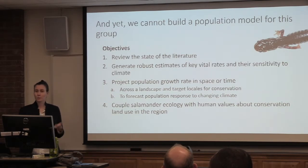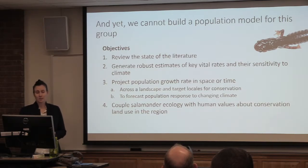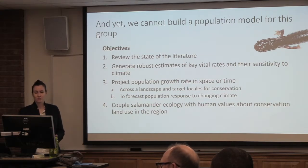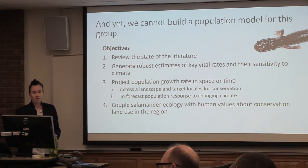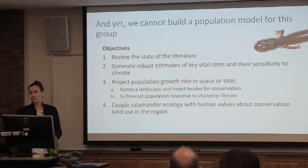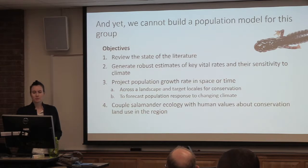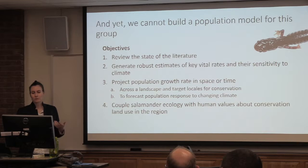And yet despite their importance and how well studied they are, we can't build a population model for this group, which is kind of crazy. So my objectives in this dissertation were to review the state of the current literature, to generate robust estimates of key vital rates and their sensitivity to climate, and to project population growth rate in space or time — across a landscape or at target localities for conservation — and also to forecast population response to changing climate.